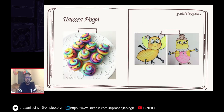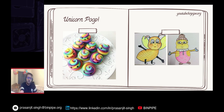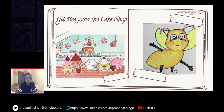Once upon a time there was a little honeybee — his name was Gitbee. He had lost his parents and lived with his grandma Lilybee. Lilybee owned the largest pastry shop in town, famous for honey cakes, honey waffles, and a special rainbow doughnut called unicorn poop. As days passed, Lilybee was growing old and weak, and she asked Gitbee to help her with her business. And that's how Gitbee started working in his grandma's pastry shop. Grandma realized that Gitbee wasn't an ordinary little bee — he was more intelligent and brighter than others his age and believed in smart work rather than slogging through monotonous chores.